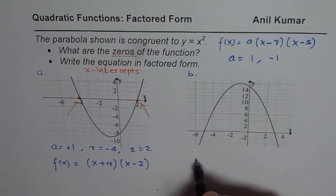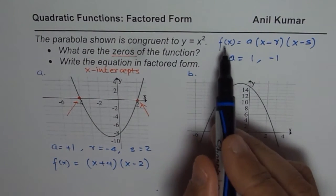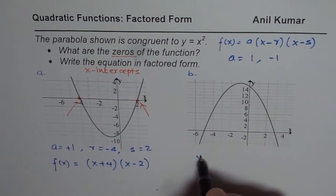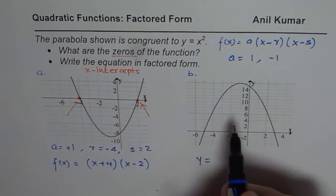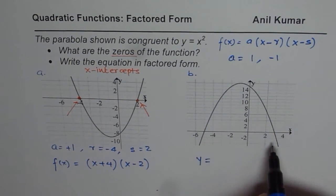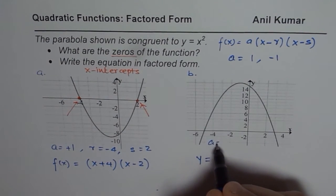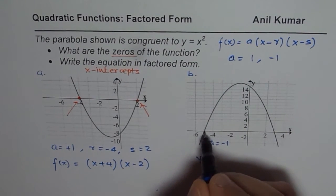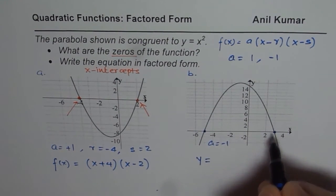The other graph equation will be... Some of you are not using function notation. You can use quadratic equation y equals... Remember, this graph is opening downwards. So A value here is negative 1. And the x intercepts, which means our zeros, are at minus 5.